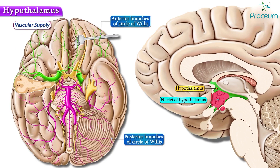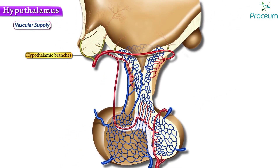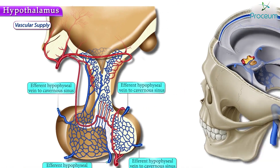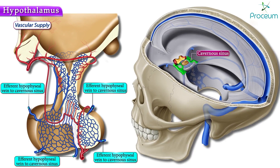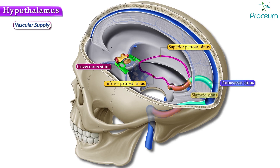The anterior and posterior branches of the circle of Willis provide arterial blood supply to the hypothalamus. The hypothalamus also receives arterial supply from the hypothalamic branches of the superior hypophysial artery. The hypothalamic arteries have anastomotic connections to the primary and secondary capillary plexus of the pituitary gland. The plexus drains venous blood to the cavernous sinus, which then drains to the superior and inferior petrosal sinuses. The superior petrosal sinus drains into the transverse sinus to form the sigmoid sinus.